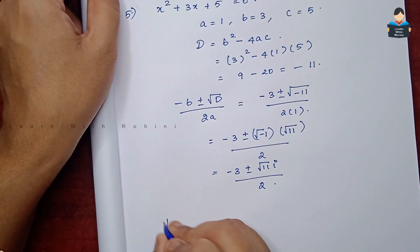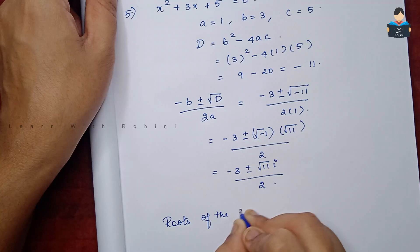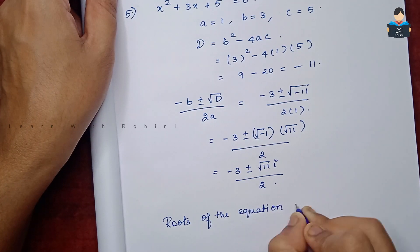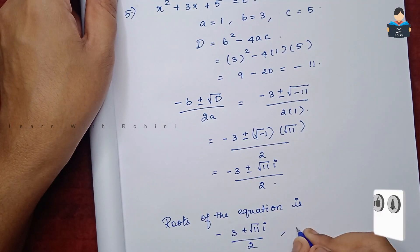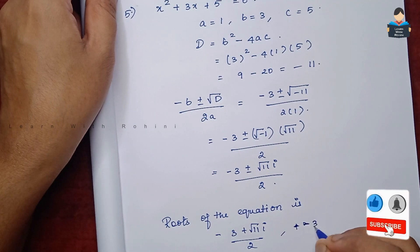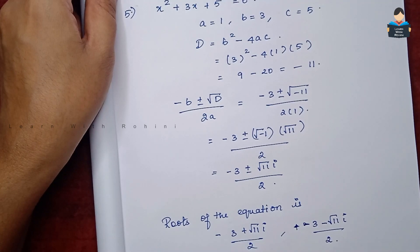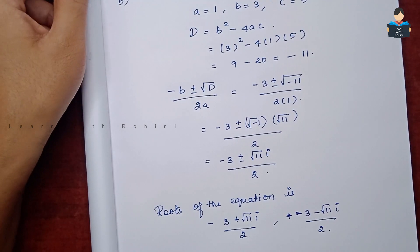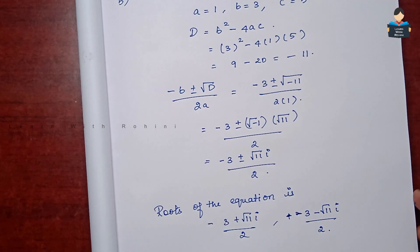The roots of the equation are (-3 + √11 · i) / 2 and (-3 - √11 · i) / 2. This completes all five sums in the video. The next video will cover 5 more sums. Please like, share, subscribe, and thank you for watching.